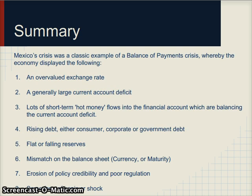In conclusion, Mexico displayed the hallmark vulnerabilities of a balance of payments crisis. It had an overvalued exchange rate and large current account deficits financed by hot money inflows rather than stable FDI. There was rising government and corporate debt, particularly dollar-denominated debt. Reserves fell as both the current account and financial account went into deficit. There was both a currency mismatch and a maturity mismatch, with enormous debt coming due but very little reserves. There was erosion of policy credibility given the Chiapas uprising, political risk, and the assassination of the presidential candidate. Finally, panic was triggered by the political assassination and higher US interest rates.